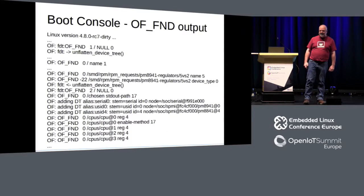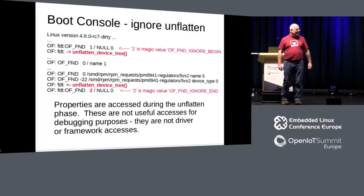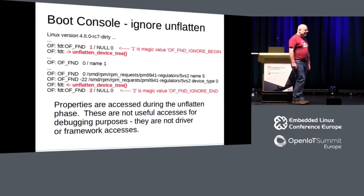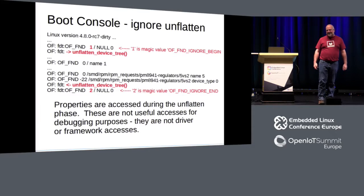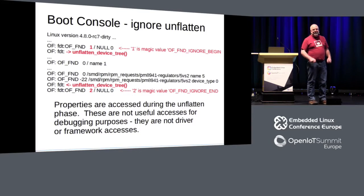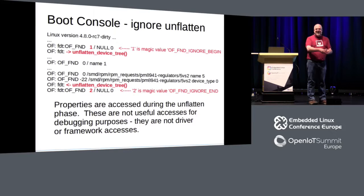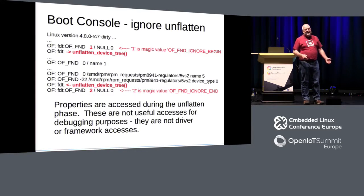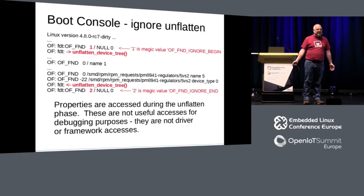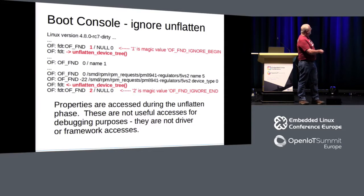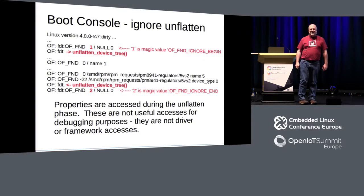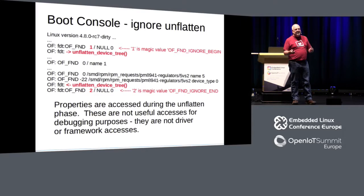Here's what it looks like — just to scare you. It's kind of cryptic. Here's the first gotcha: the kernel takes that device tree blob, which is a binary object, and expands it into a big data structure. While it's doing that, it's accessing properties. So if we're reporting all these properties that are just part of the expansion process, that's not useful information. I had to put in a marker to say 'here is where the end of that expansion process is — ignore all debug messages before that point.'